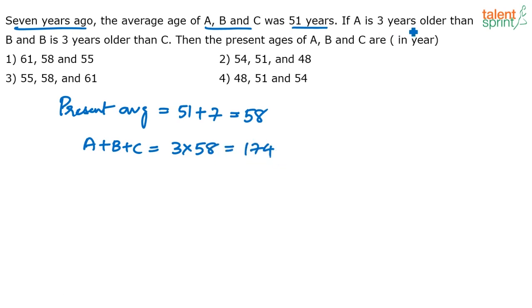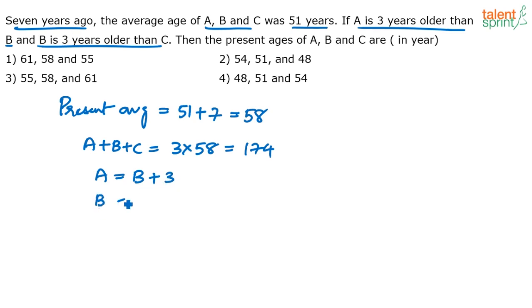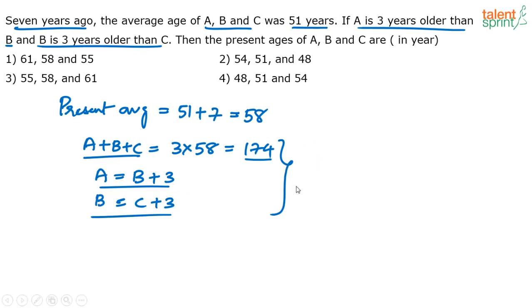The other thing known to us is that A is 3 years older than B and B is 3 years older than C. So A equals B plus 3, and B equals C plus 3. That gives us three equations: A plus B plus C equals 174, A equals B plus 3, B equals C plus 3. You can solve these three equations, but a smart person will not solve them directly.